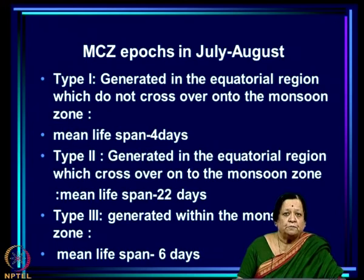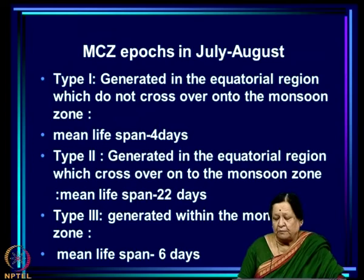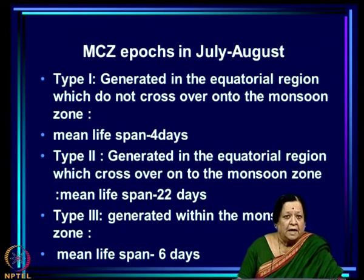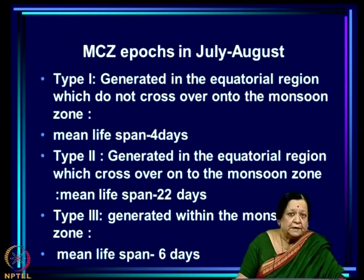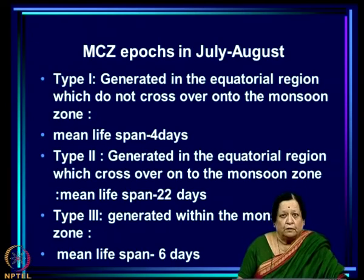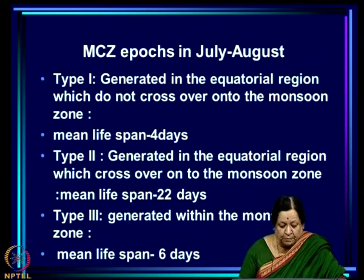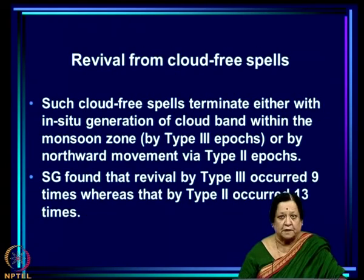Type 3 are those generated within the monsoon zone belt, often over the head Bay of Bengal, and their mean lifespan is again only six days. So those generated over the equatorial region as well as those generated over the head Bay have relatively small lifespans, while the northward propagating modes have the largest lifespan.